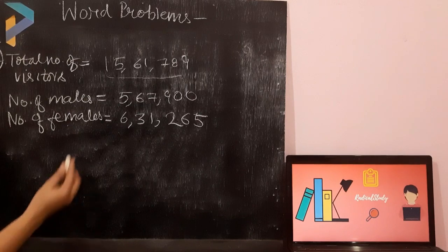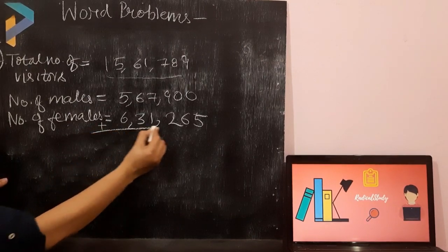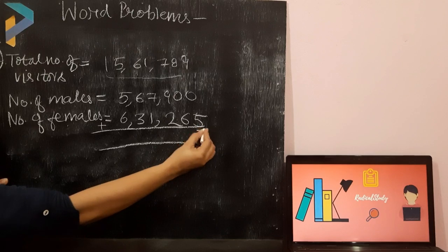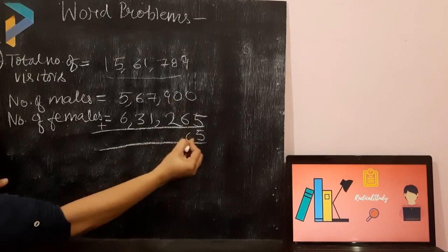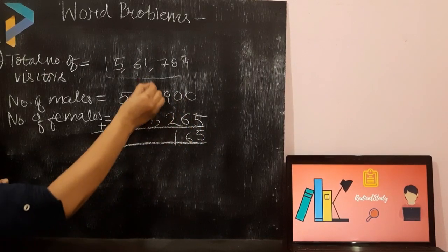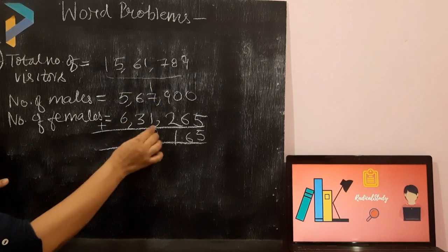I am going to add it for you. I am adding here only. 0 plus 5 is 5. 0 plus 6 is 6. 9 plus 2 is 11. 1 carry 7 plus 1, 8. 8 plus 1, 9.